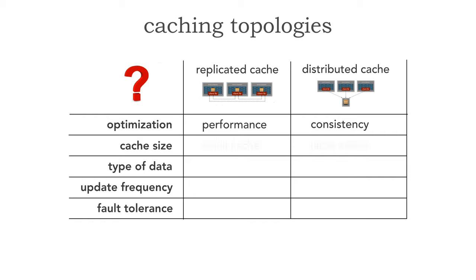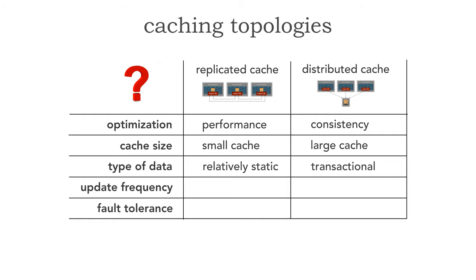The next criterion is the size of the cache. Replicated caching is really well suited for small caches — usually less than 100 megabytes in memory. When it gets larger than that, a distributed cache is more appropriate. Especially in microservices, when you start auto-scaling instances of a microservice, you're also scaling that memory usage, so larger caches tend to be a better match with distributed caching and smaller ones with replicated.